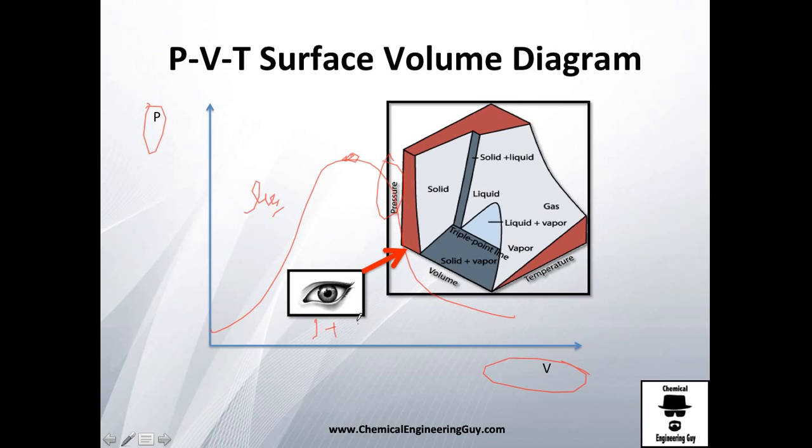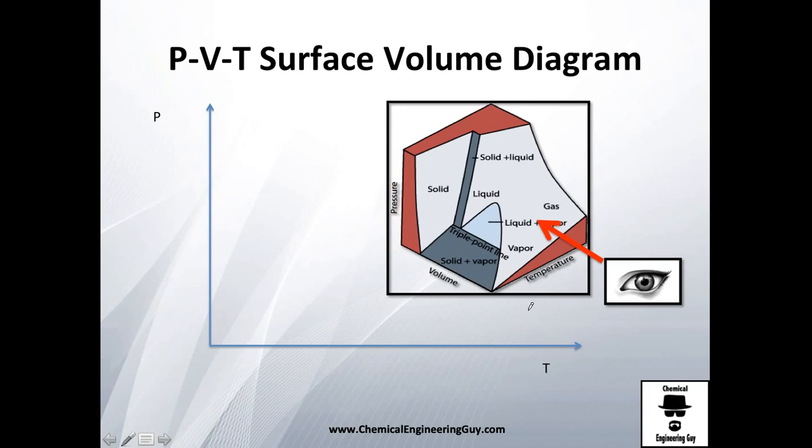You will see this is liquid, this is the critical point, this is the liquid-vapor mixture, and this is the gas or vapor. But if you were to see this here, you know it - we saw this diagram before - you will only see this line which is the vapor-solid equilibrium. You will see the point at which they get together which is the triple point here.